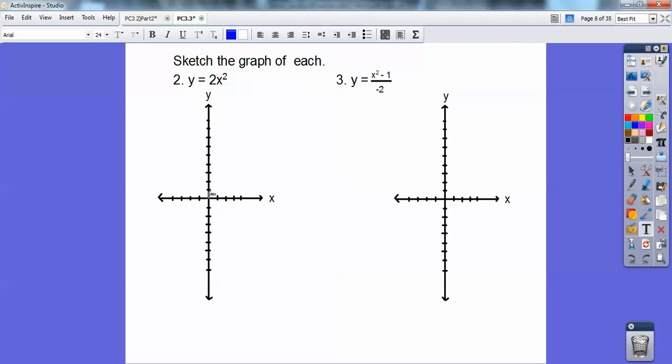If I went from the origin again, over 2, 2 times 2 squared would be 8. It's going to go up 8 on both sides. Okay, so over 1, up 2 times, over 2, up 8. And then go ahead and graph it. There's my parabola.